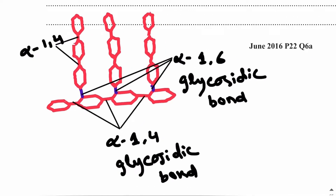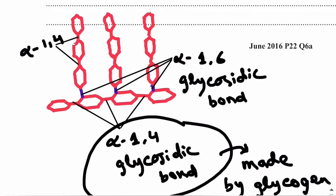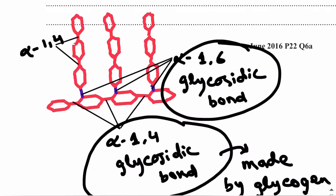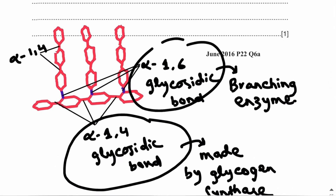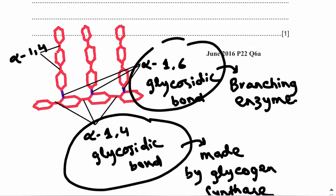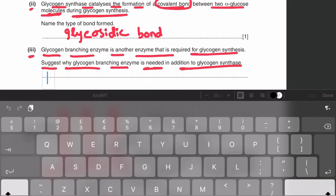To make different bonds, different enzymes are required. Alpha 1-4 glycosidic bonds are made by glycogen synthase, whereas to make alpha 1-6 glycosidic bonds we need a branching enzyme. These are separate bonds, so the shape of the active site will be different. To make alpha 1-4 glycosidic bonds, a different active site is required to align the alpha glucose molecules accordingly. To make alpha 1-6 glycosidic bonds, a different active site is required to align the glucose molecules so that alpha 1-6 glycosidic bonds are formed, creating branches.